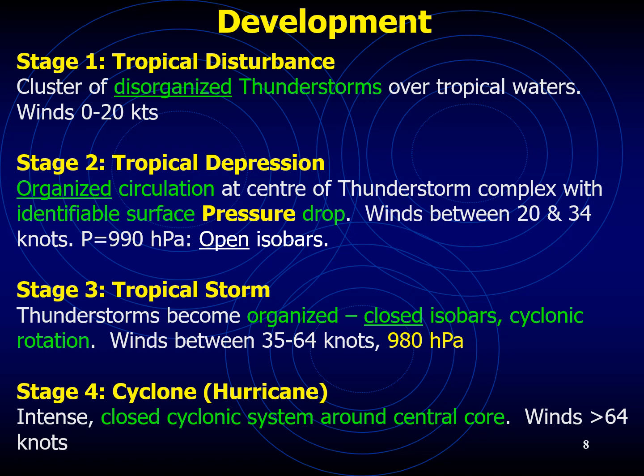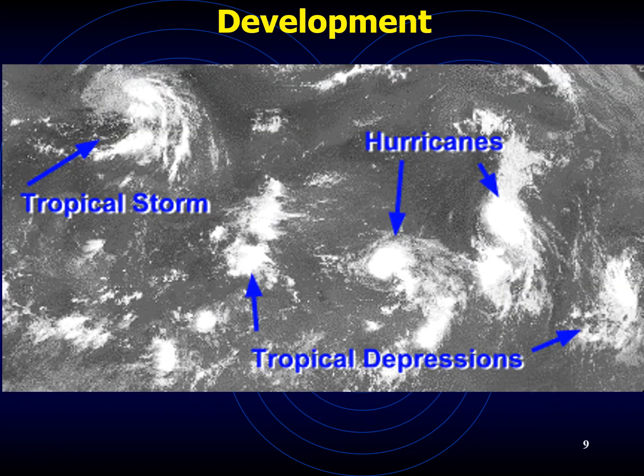Over a period of time, these tropical thunderstorms start to become organized, forming closed isobars within which the latent heat released from the clouds starts to fuel the tropical storm. Winds start to increase in speed and the pressure starts to drop steadily. Finally, this organized system of thunderstorms turns into a cyclone or a hurricane with a closed cyclonic system around a central core with winds exceeding 64 knots.